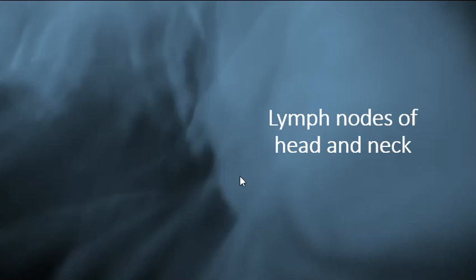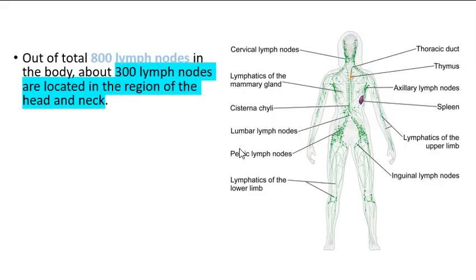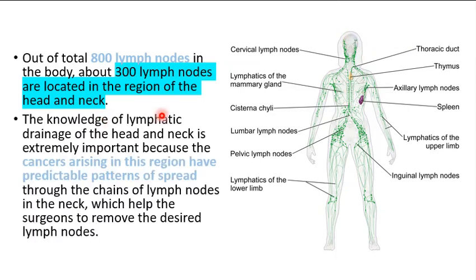Hello everyone and welcome to this detailed video on the lymph nodes of the head and neck. Did you know that there are about 800 lymph nodes in the entire body, and about 300 of these are located in the region of the head and neck? The knowledge of lymphatic drainage of the head and neck is extremely important because cancers arising in this region have predictable patterns of spread through the chains of lymph nodes, which helps surgeons to remove the desired lymph nodes.